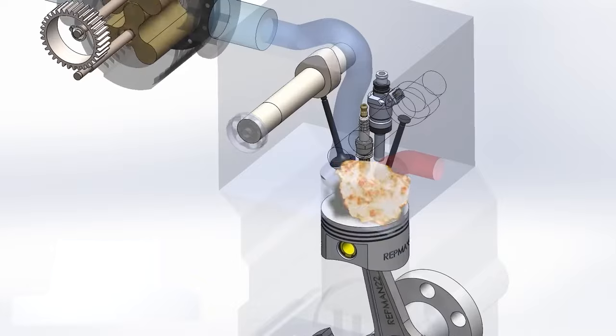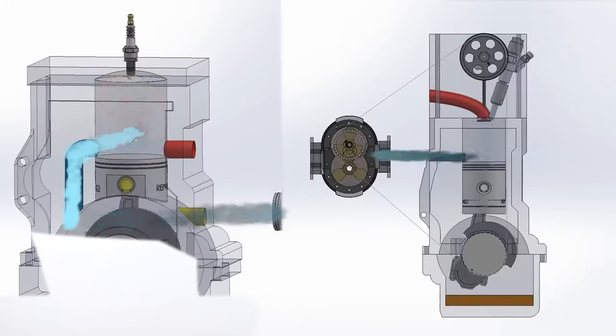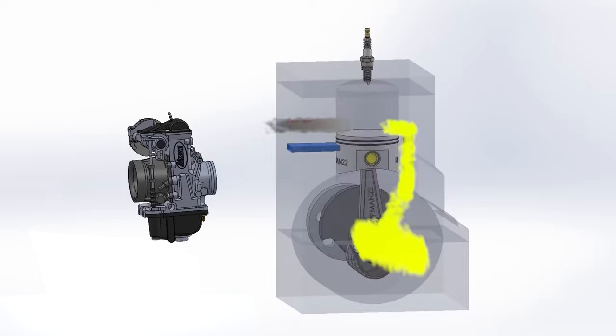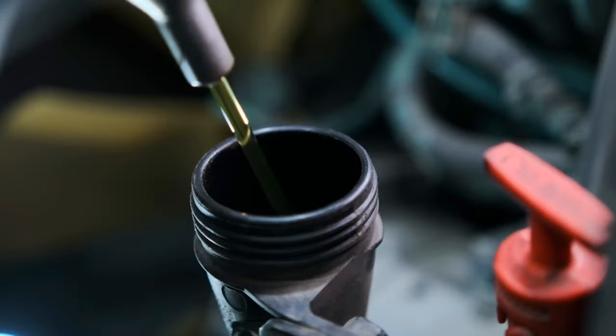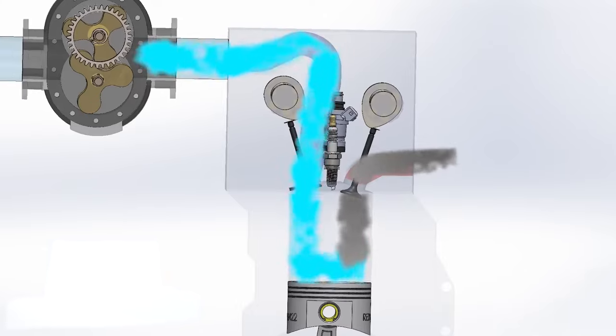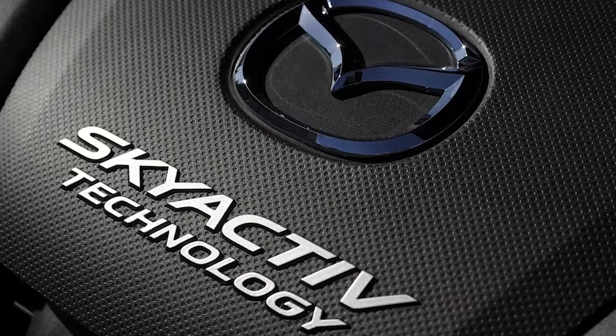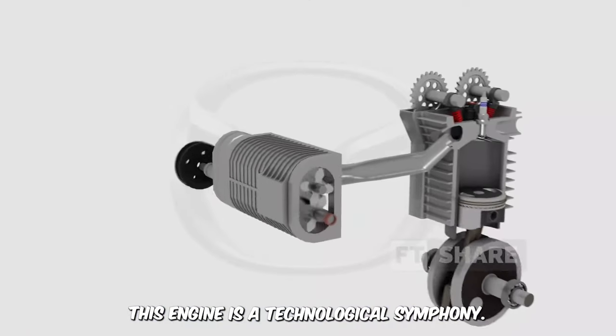Mazda's two-stroke engine is a tech buffet. It borrows valve moves from four-stroke playbooks, integrates with diesel EGR systems for recycling gases, and executes one power stroke per revolution, doubling cylinder action. The oil remains untouched, and a cool compressor from two-stroke diesel engines keeps things breezy. And Mazda added Skyactiv technology, further boosting fuel efficiency. This engine is a technological symphony.